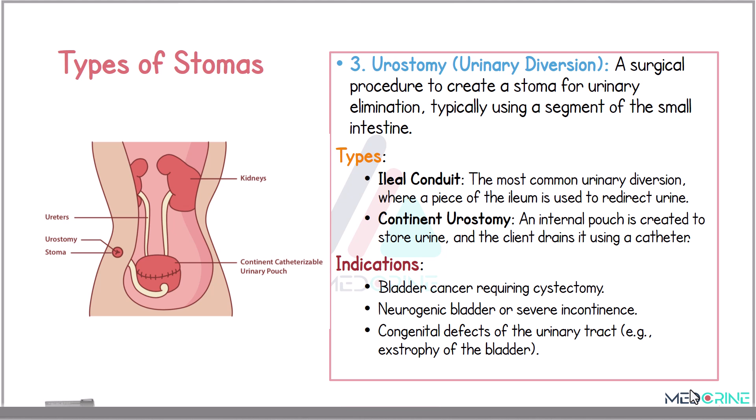The third type of stoma is a urostomy, or urinary diversion. A urostomy is a surgical procedure to create a stoma for urinary elimination, typically using a segment of small intestine. There are two types: an ileal conduit and a continent urostomy. An ileal conduit is the most common urinary diversion procedure, where a piece of the ileum is used to redirect urine. In a continent urostomy, an internal pouch is created to store urine, and the client drains it using a catheter.